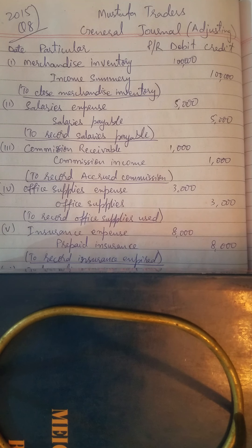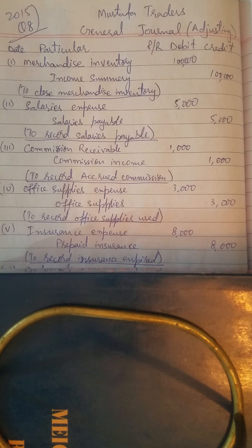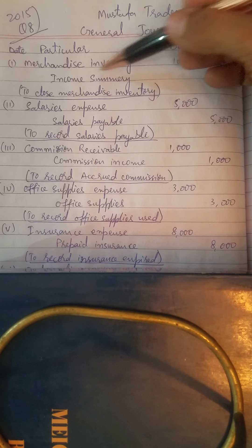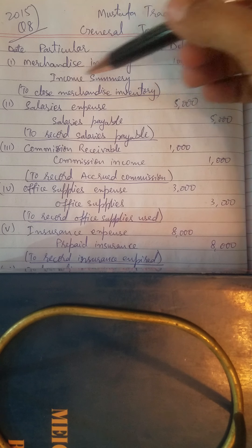Assalamu alaikum students. Now we are starting 2015 adjusting entries, question number eight. The trial balance given in the question is for Mustafa Traders. The first adjustment is merchandise inventory valued at Rs. 1,000,000. The entry is: merchandise inventory debit, income summary credit, to close merchandise inventory.